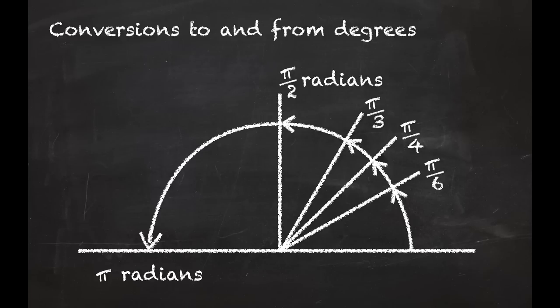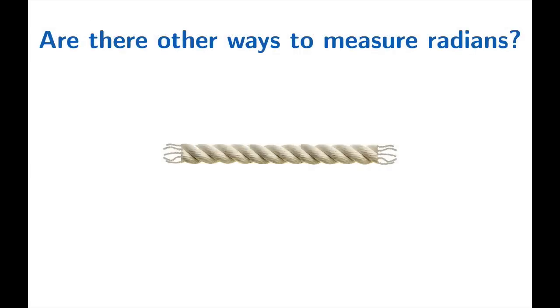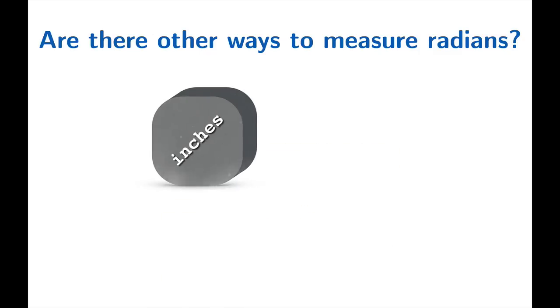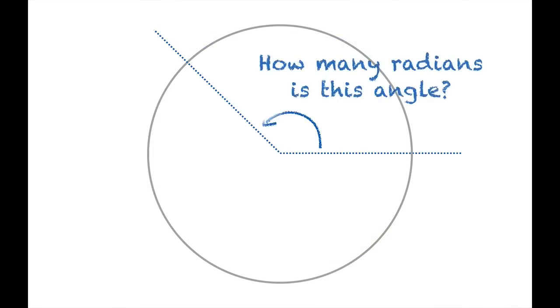Are there other ways to measure radians? Do you keep needing to go back to that original radius rope that you use to draw your circle in the sand? In fact, you can use any units you want. Suppose you had a tape measure that measured in inches. How would you use that tape measure to find the number of radians in an angle?